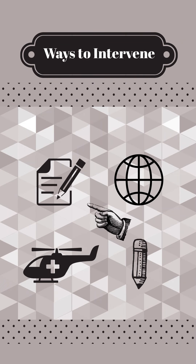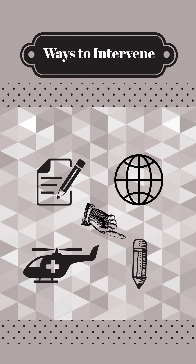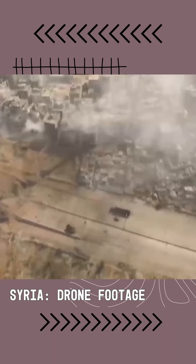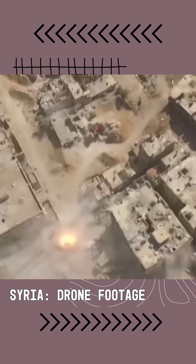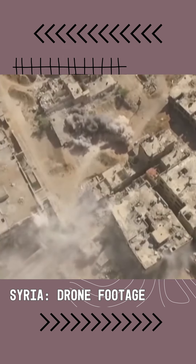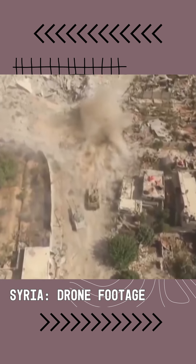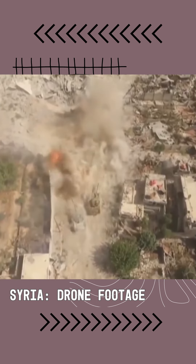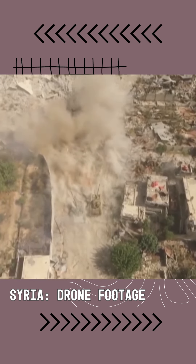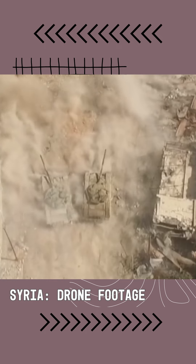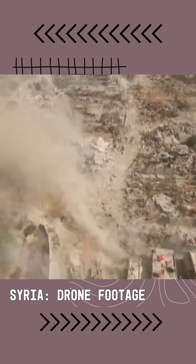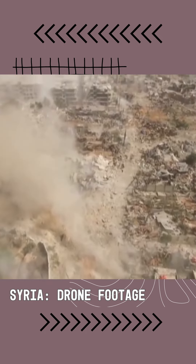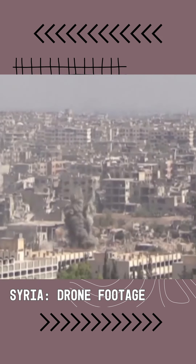Once the consensus for intervention is established, there are several tiers of involvement countries must decide between. Although bombing perpetrators of genocide involves the least risk for intervening parties, remote actions such as airstrikes should be avoided at great costs, since they often include civilians in the collateral damage. Sadly, this was the case for the unfathomable civilian atrocities when the US bombed Syria in 2018.